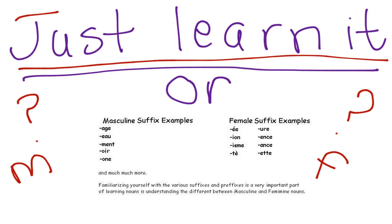Another thing you can learn is what suffixes make a word masculine and what suffixes make a word feminine. The suffixes -age, -eau, -ment, -oir, and -on are masculine. The feminine suffixes are -ée, -ion, -isme, -té, -eur, -ance, -ense, and -et. There are many more, but these are just some examples of masculine and feminine suffixes.